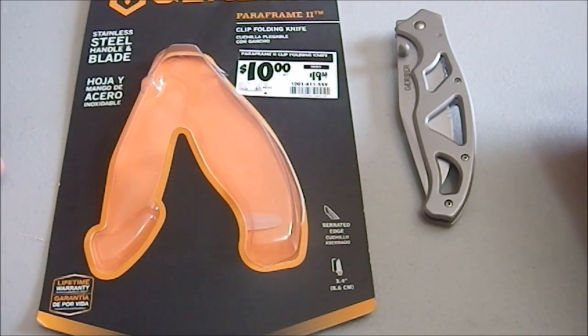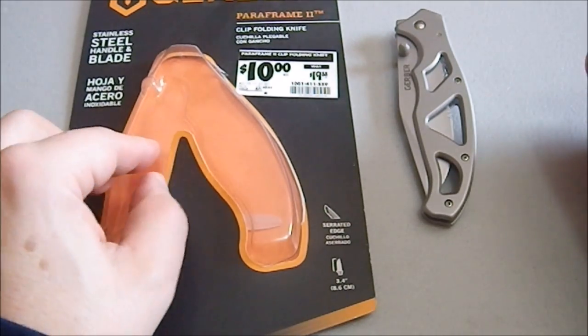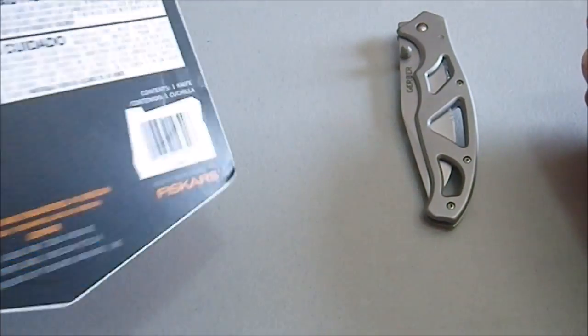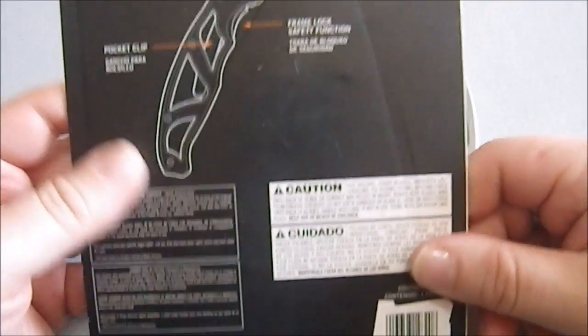Greetings YouTube. Today we're looking at the Gerber Para Frame 2 clip folding knife, stainless steel handle and blade, 3.4 inches. A little blurb on the back.